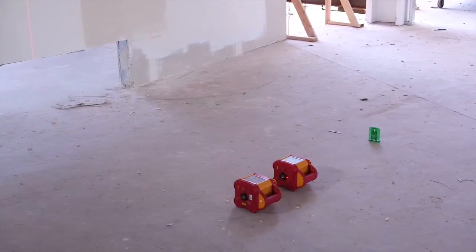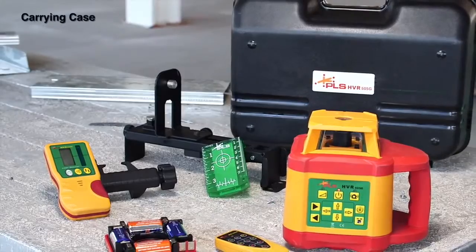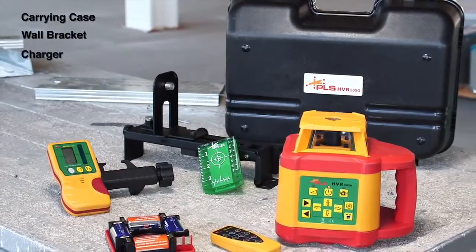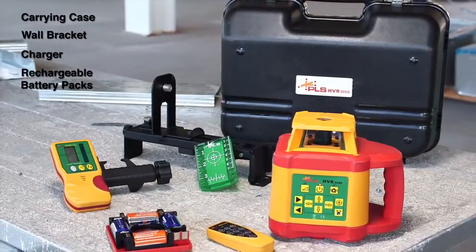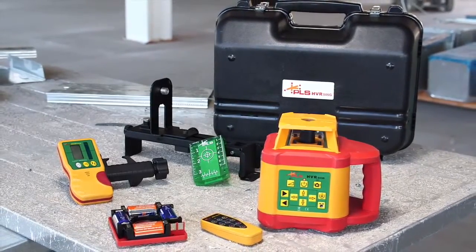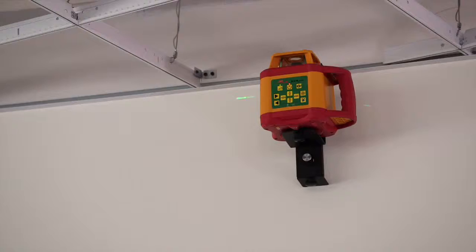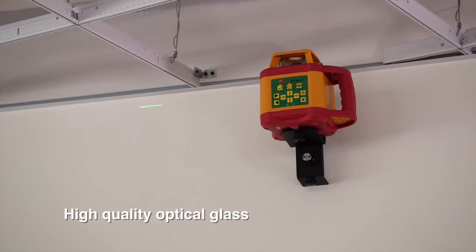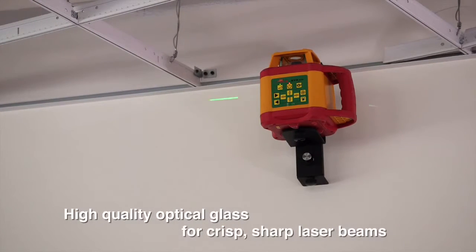Both of these precision instruments come with a full array of accessories, including carrying case, wall bracket, charger, rechargeable battery packs, and HVD 505 Laser Detector. Quality tested and packaged in San Rafael, California, these precision lasers use high-quality optical glass for crisp, sharp laser beams.